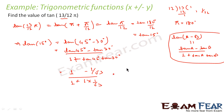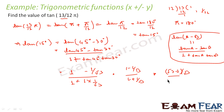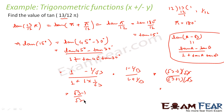Substituting: tan 45° = 1 and tan 30° = 1/√3. So we get (1 − 1/√3) / (1 + 1/√3). Simplifying: (√3 − 1)/√3 divided by (√3 + 1)/√3. The √3 cancels, giving (√3 − 1) / (√3 + 1).